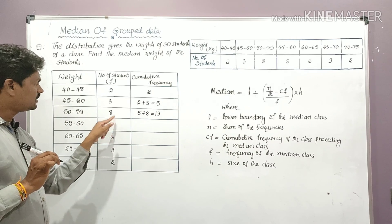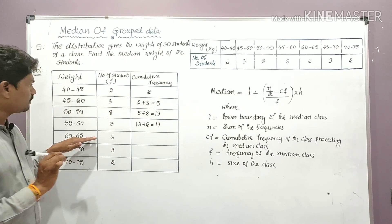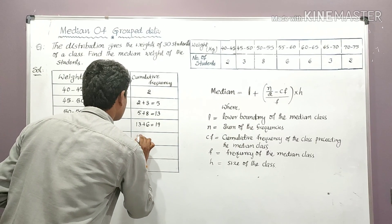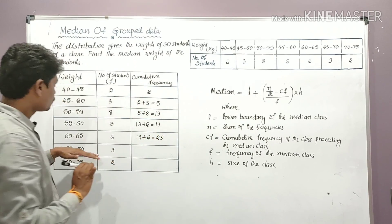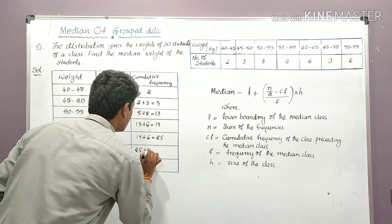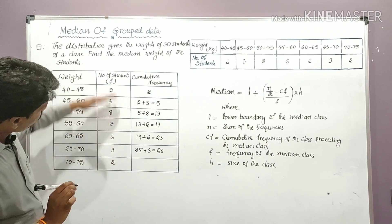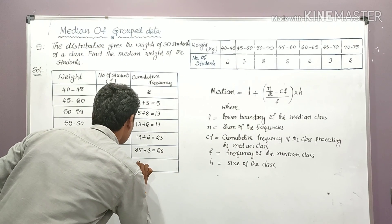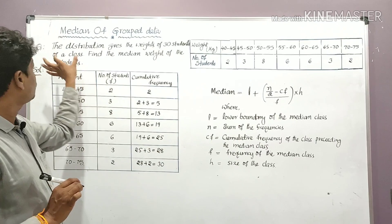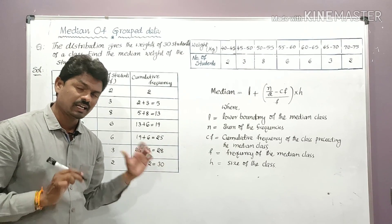Students weighing less than 60 kg: 13 + 6 = 19. Less than 65 kg: 19 + 6 = 25. Less than 70 kg: 25 + 3 = 28. Less than 75 kg: 28 + 2 = 30. So the total number of students is 30, which we represent as n.